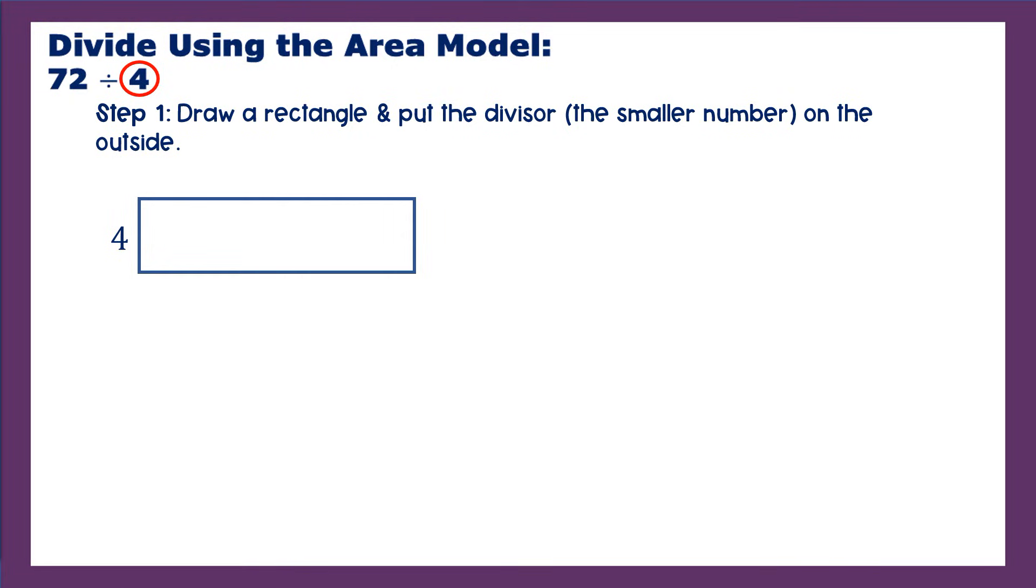So step one, draw a rectangle, put the smaller number, the divisor, on the outside of the rectangle. Step two, instead of dividing 4 into 72 all at once, let's say you say I don't know what to multiply 4 by in order to get 72. And really, who does off the top of their head? You're going to pick smaller multiples of 4. All that means is you're going to pick smaller 4 times table facts. And you're going to get to 72 in steps.